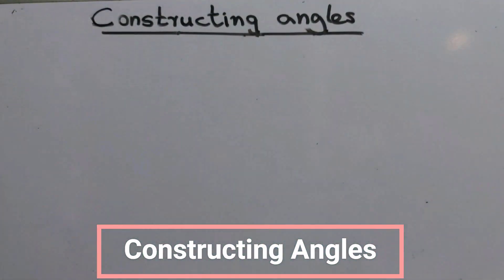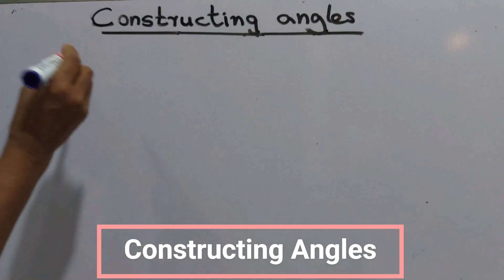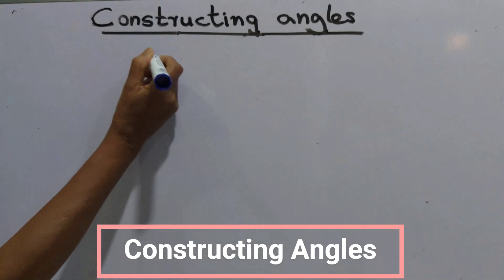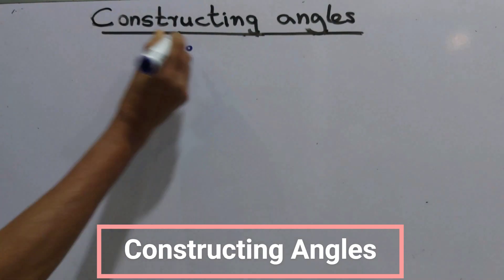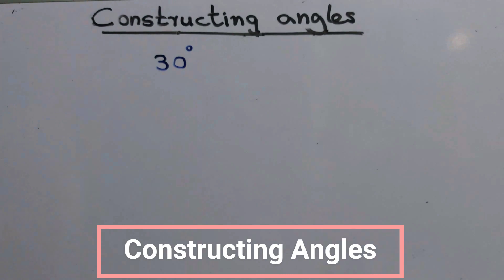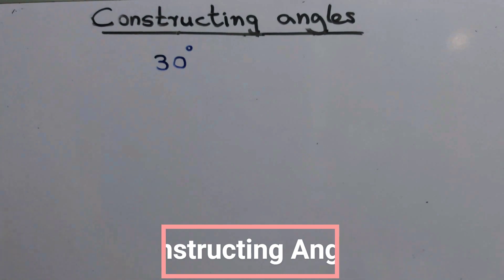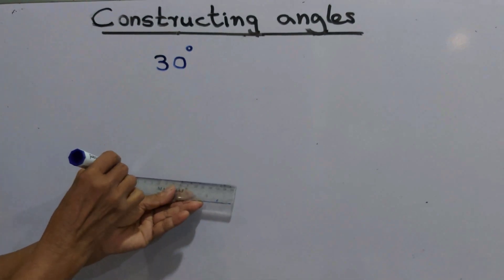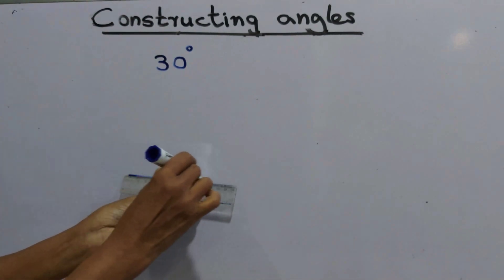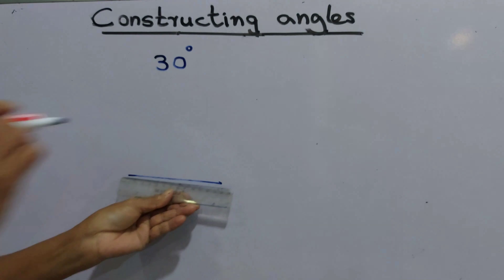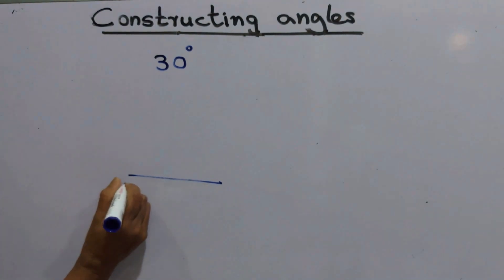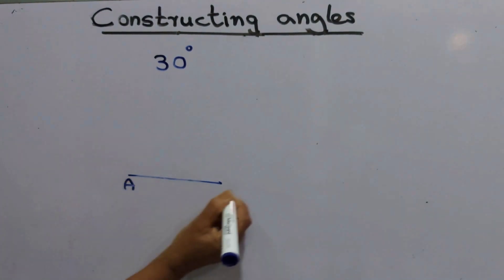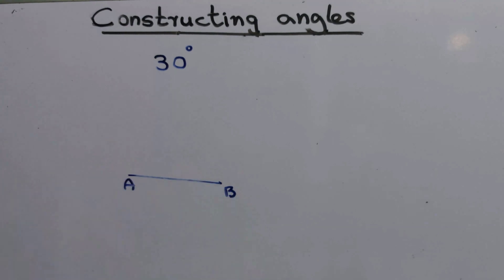Today, under constructing angles, we are going to construct an angle of 30 degrees. First, draw a line segment and name it as AB, then take the compass.